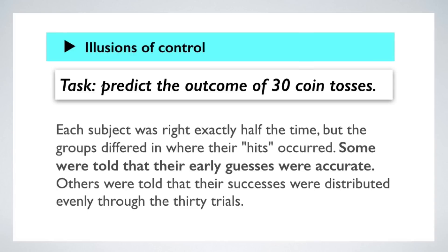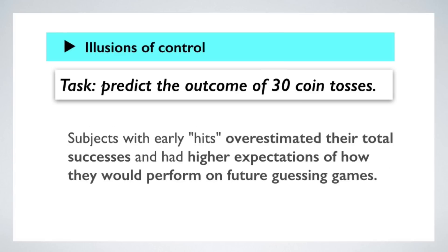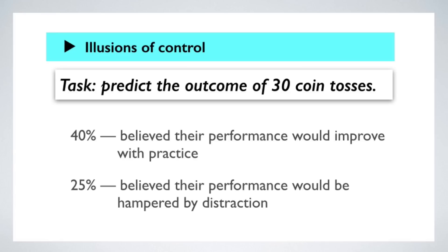Afterward, the subjects were asked to estimate how successful they were at predicting outcomes and how successful they thought they would be in future guessing games. The group who was told they had success early on overestimated their total number of successful predictions and had higher expectations for future performance. So early hits seemed to generate a kind of primacy effect, where information given early in the sequence tends to dominate a person's judgments. The other startling result was that 40% of all participants said their performance would improve with practice, and 25% thought their performance would be hampered by distraction — even though the task was to predict a chance outcome, a random coin toss.